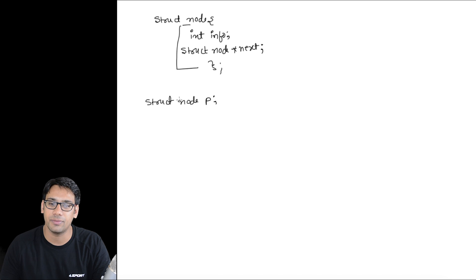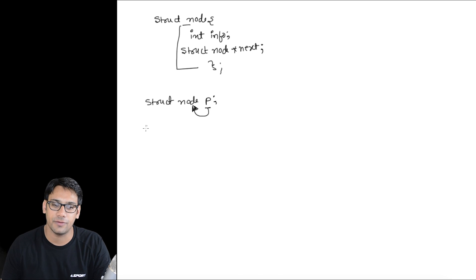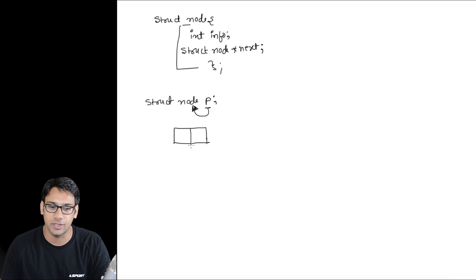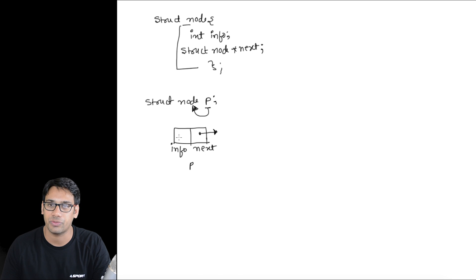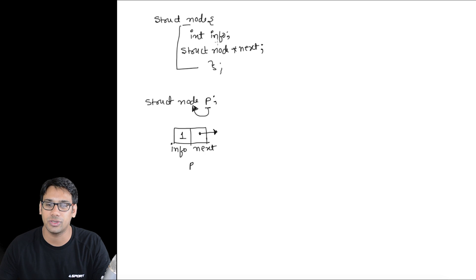If you declare a variable of this structure — `struct node p` — then this variable `p` has two parts. The first part is the information part, and the second part is the next part. The next part stores the address of another node of the same type, and the information part stores an integer value — for example, the number 1.